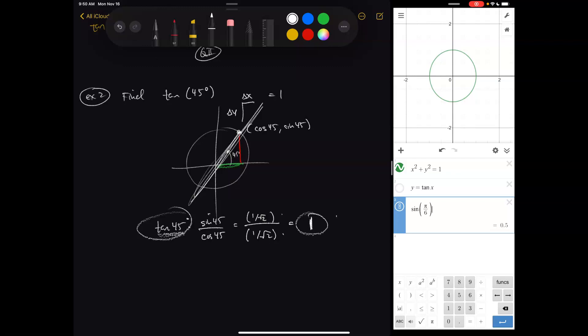So tangent is slope, it's a ratio. What's the problem that comes up with ratios?